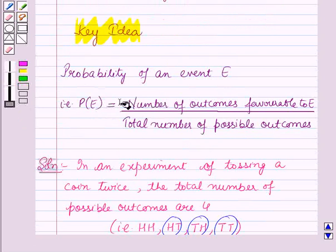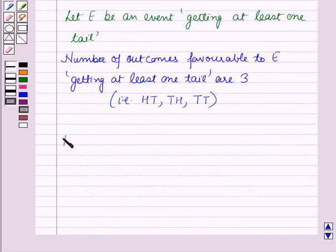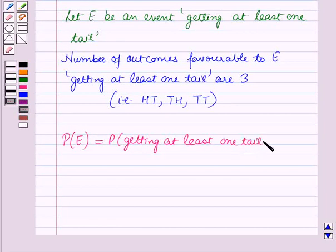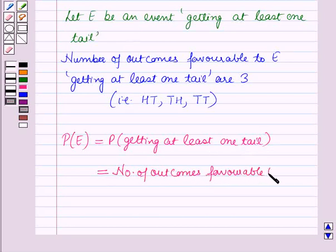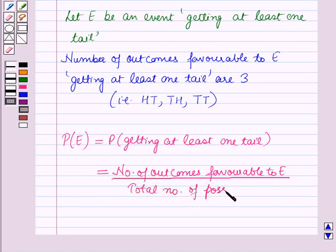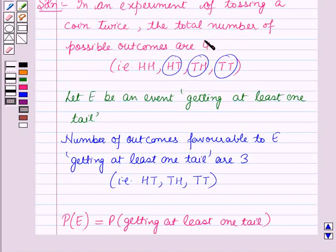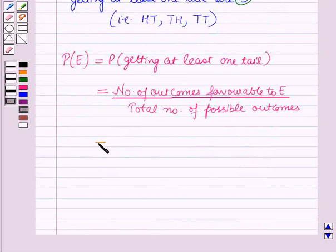Now for finding the probability we will use the formula given in the key idea. So probability of event E, that is probability of getting at least one tail, is equal to number of outcomes favorable to E over total number of possible outcomes. The total number of possible outcomes are four and number of outcomes favorable to E are three, so this will be equal to three by four.